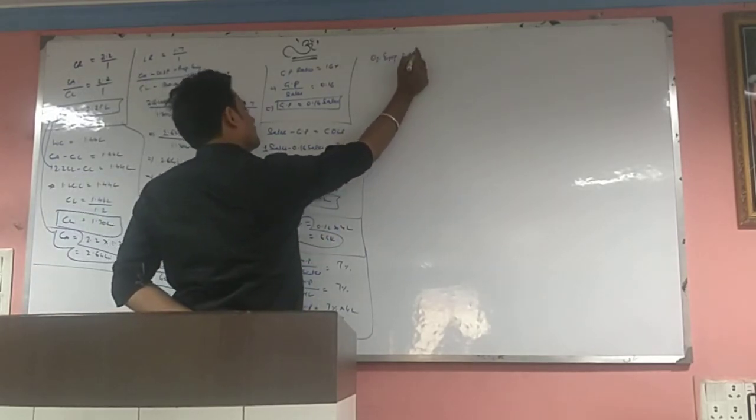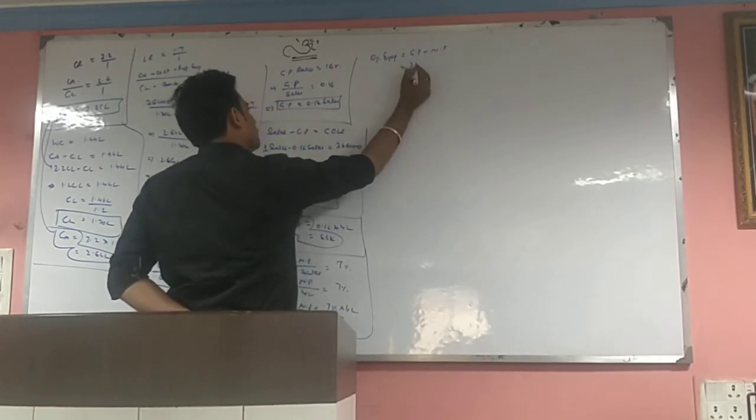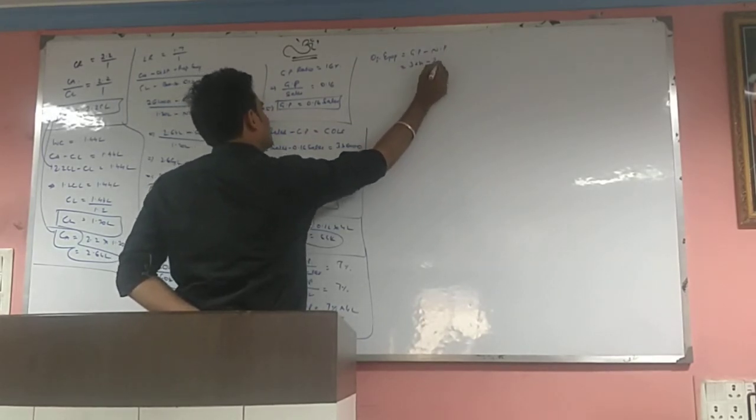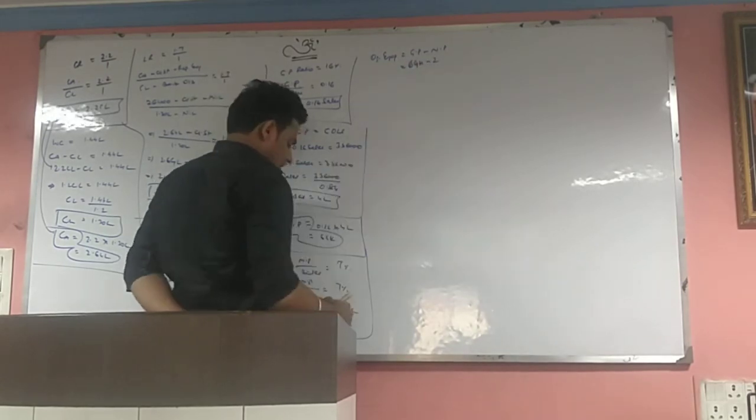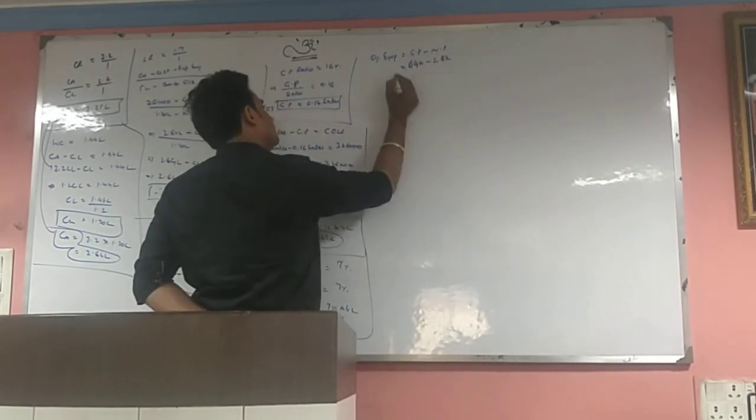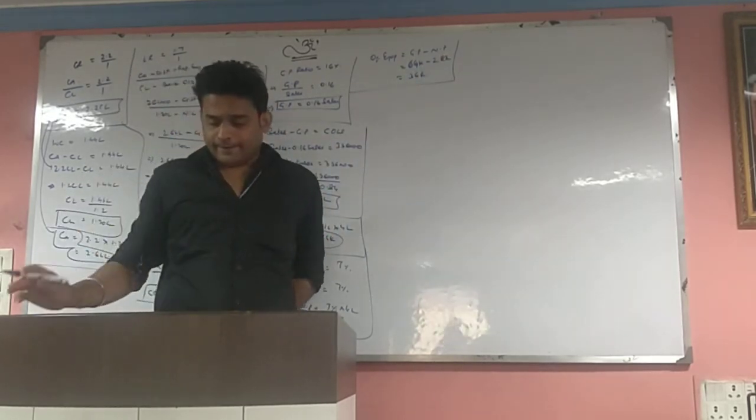So net profit equals 7% of 4,00,000, that is 28,000. GP is found, NP is found. Now you see that operating expenses equals gross profit minus net profit, which is 64,000 minus 28,000 equals 36,000. You can place these values.